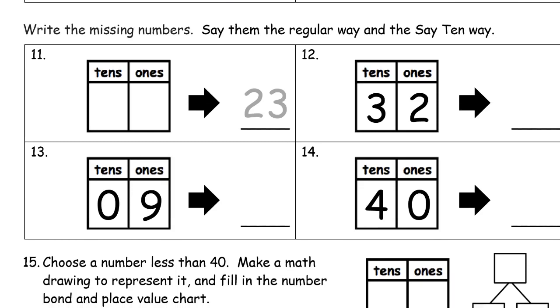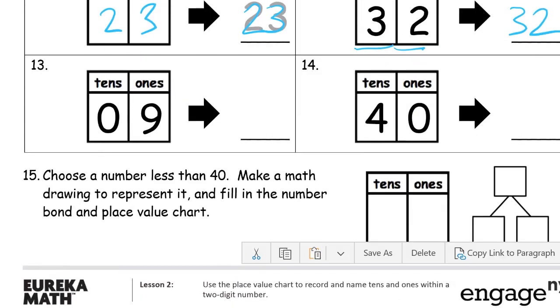Write the missing numbers, say them the regular way, and the say ten way. Now if you don't know the say ten way, this is how you're going to say it. So the regular way for this one is twenty-three. That's the regular way. Say ten way is two tens, three ones. Some people will just say two tens, three, but I'll say the ones, two tens, three ones. So this is the say ten way, saying it out loud. Three tens, two ones, the regular way, thirty-two. And it's important to say these things out loud and practice saying them, because it really does help.